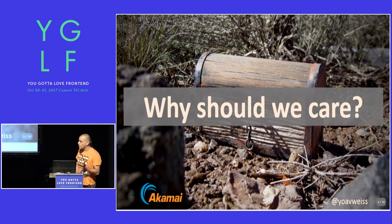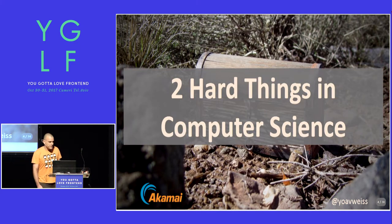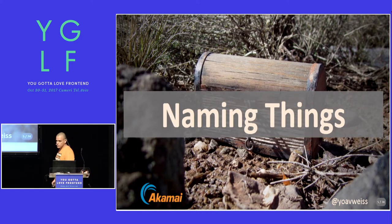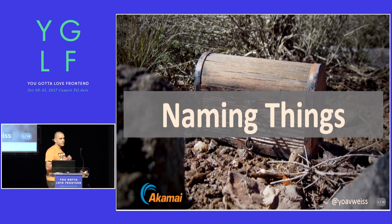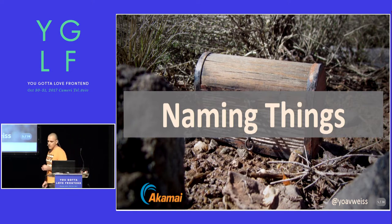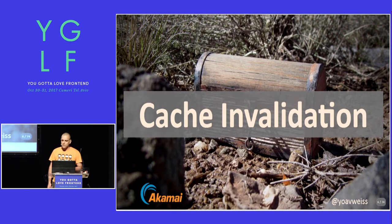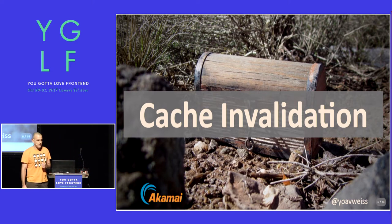But first, why should we care? You've most probably heard the saying that there are two hard things in computer science. The first one, naming things, is pretty obvious because giving something a short yet meaningful name is a very hard cognitive exercise. But the other one — cache invalidation — is less obvious. If you've never had to deal with caches, you may not grasp at first why cache invalidation is extremely hard.